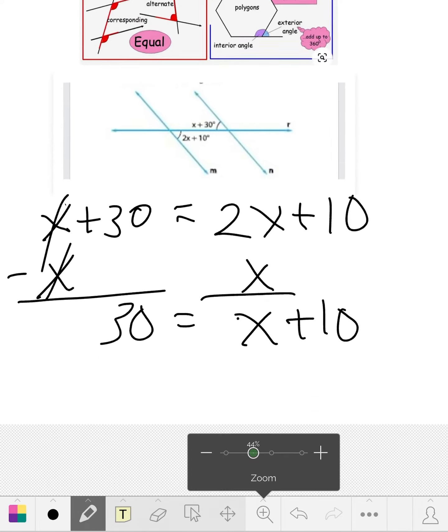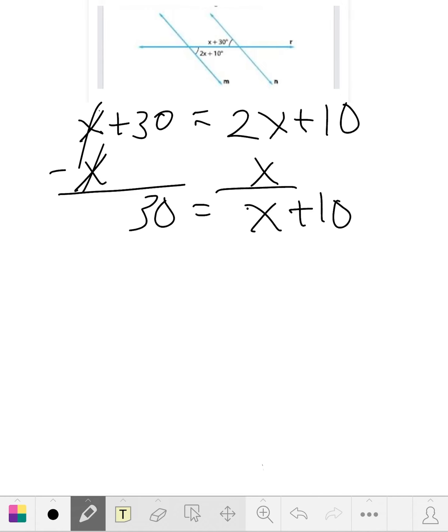Let's subtract 10 from each side to get x by itself. We subtract 10 here, these two will cross each other out, and we come down with x equals... 30 minus 10 is 20, so x equals 20. But that's not the final answer.